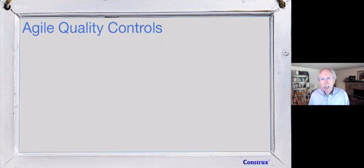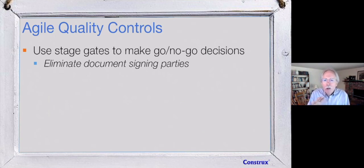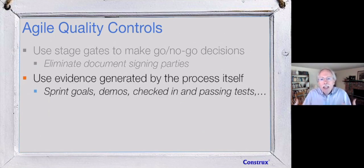When thinking about agile quality controls, we can start seeing stage gates more as go/no-go decision points rather than document signing parties. Too often stage gates became about checking off that documents were created, not whether the overall investment still made sense. We can change from a document signing party to asking: is this still making financial sense? Do we need to adjust our goals? Do we need to inspect and adapt? And if we build incrementally, we can use evidence generated by the process itself rather than relying on those documents.